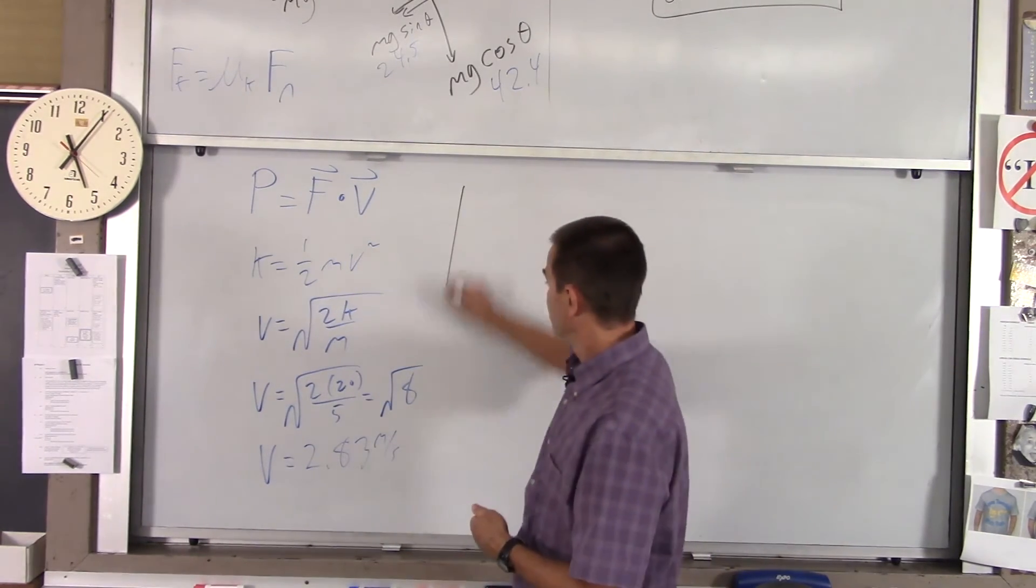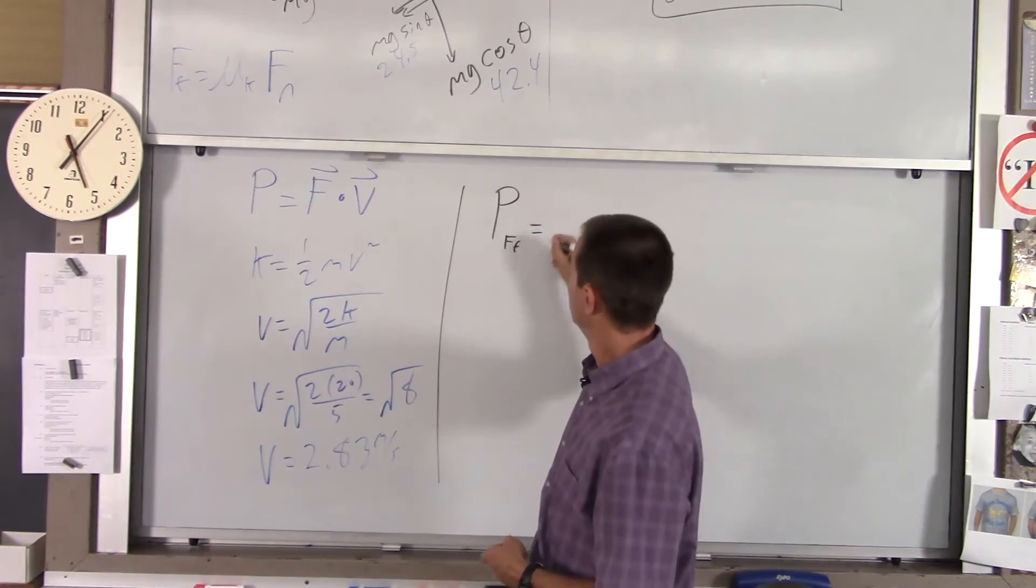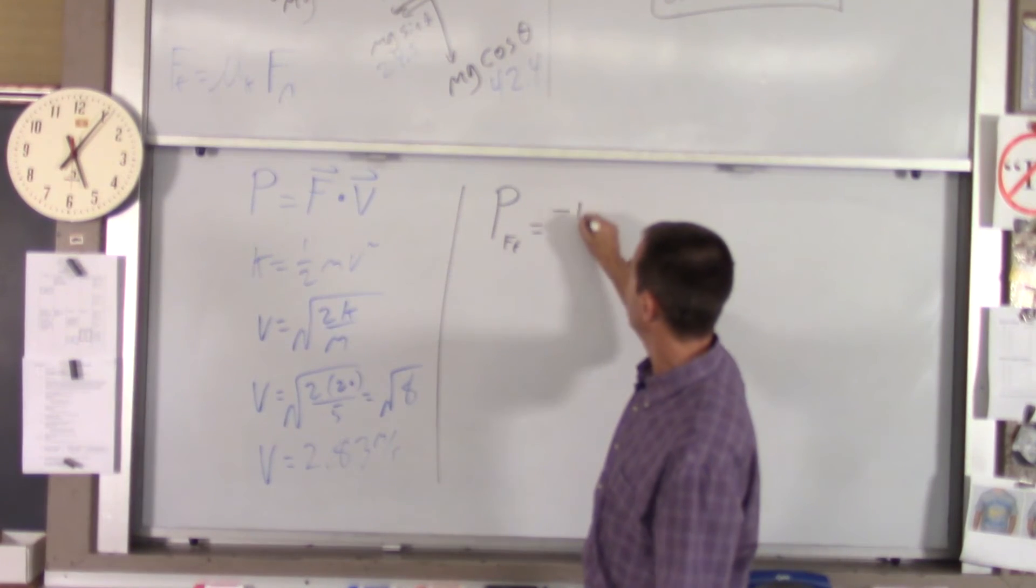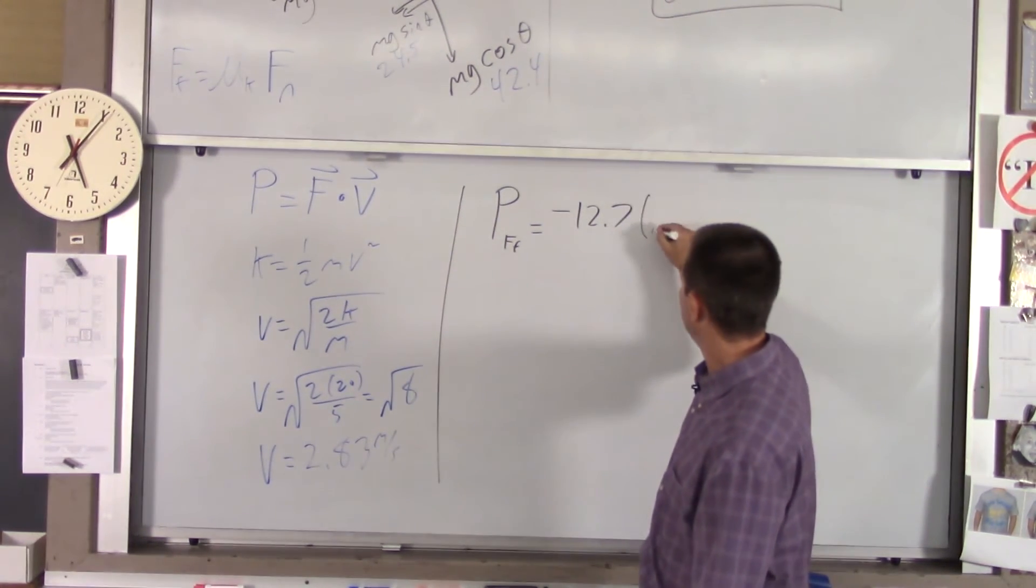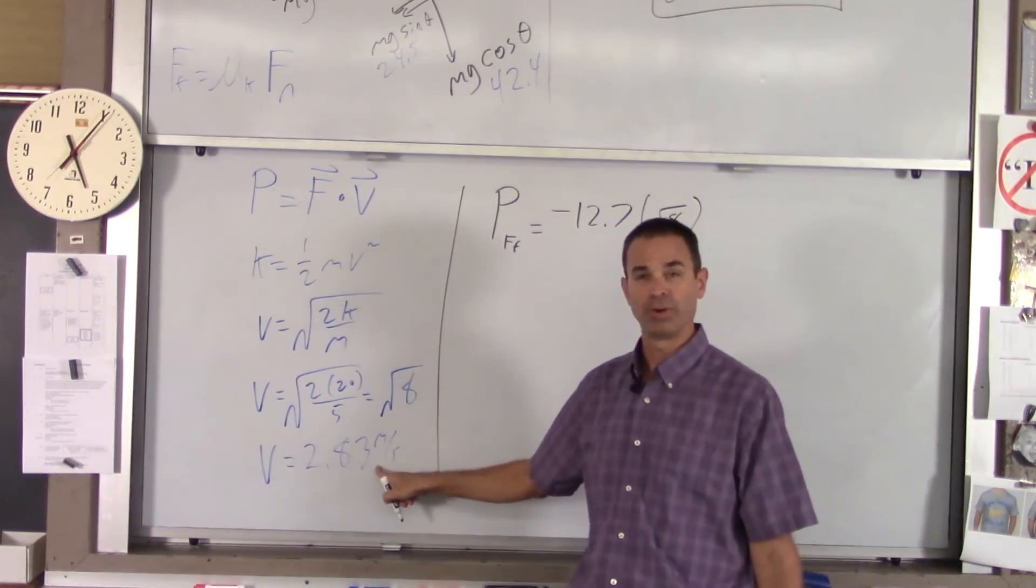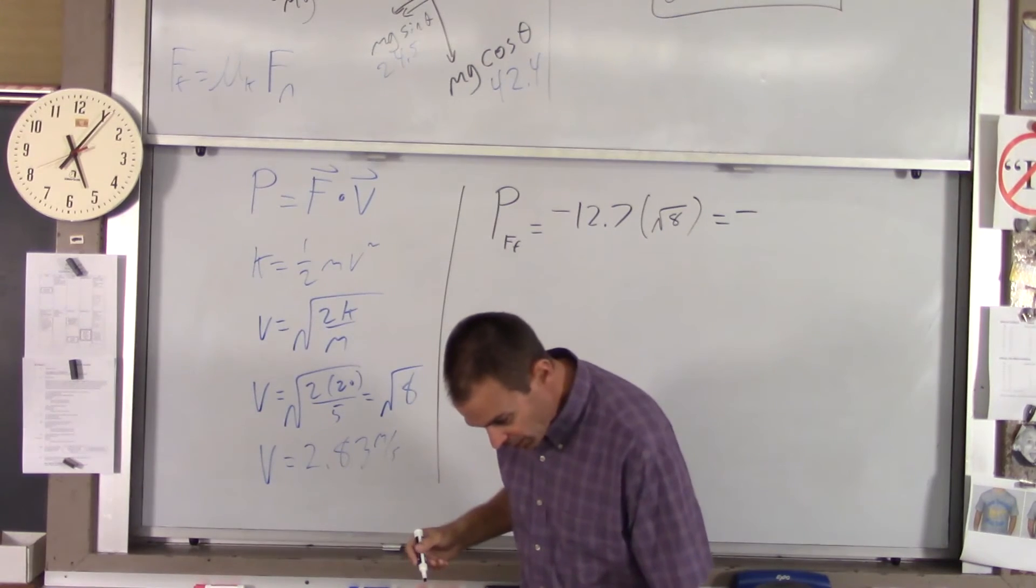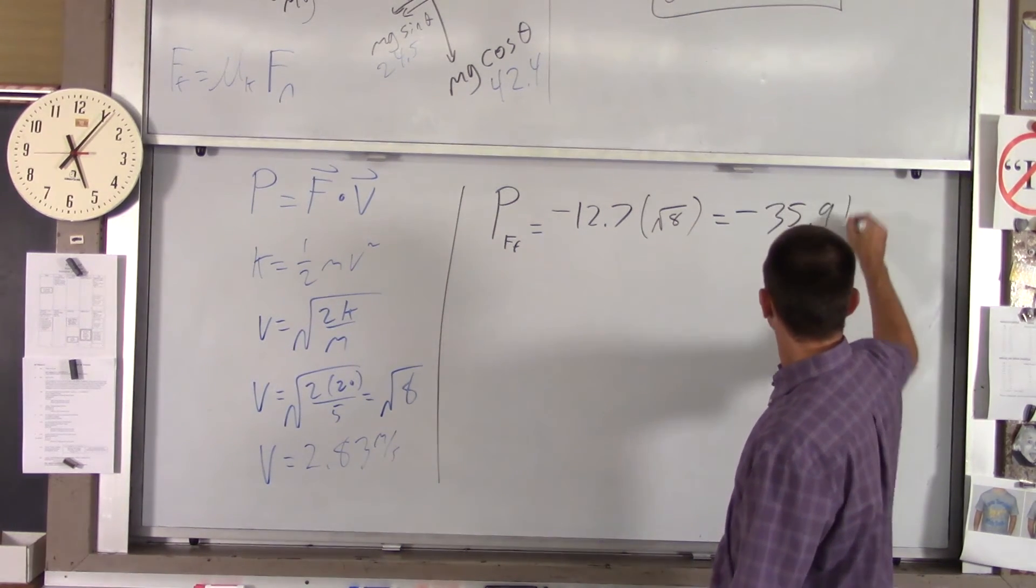So, the power being delivered by the force of friction is equal to the force of friction, which is negative 12.7, it's in the opposite direction of the motion, times our velocity, which I'll write root 8 there, but we also know that is about 2.83. If you do the math, you get negative 35.9 watts.